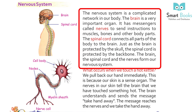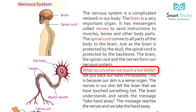The nervous system is a complicated network in our body. The brain is a very important organ. It has messengers called nerves to send instructions to muscles, bones, and other body parts. The spinal cord connects all parts of the body to the brain. Just as the brain is protected by the skull, the spinal cord is protected by the backbone.